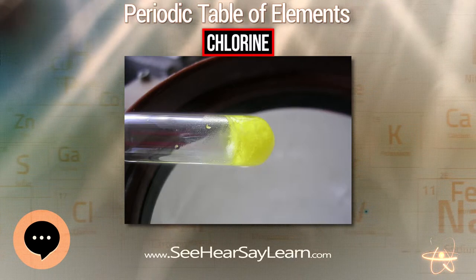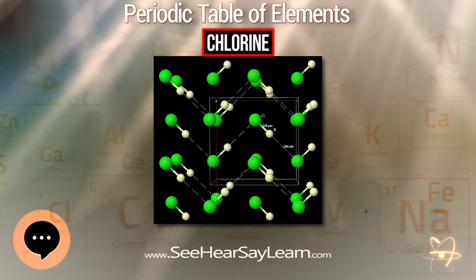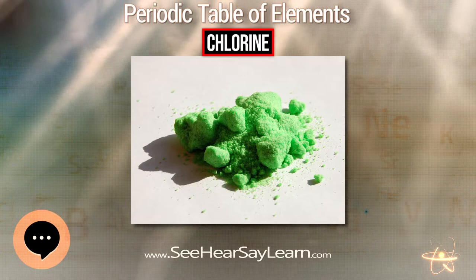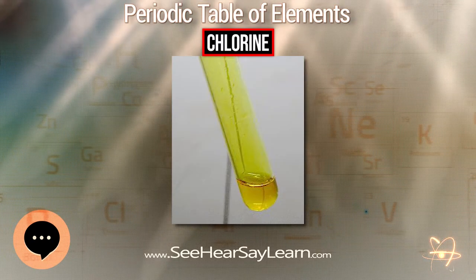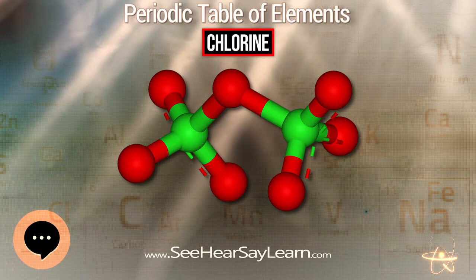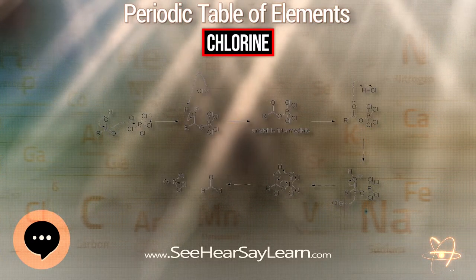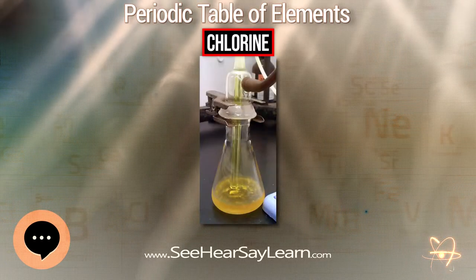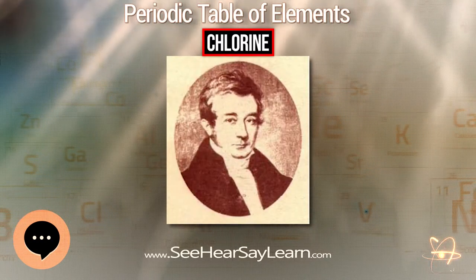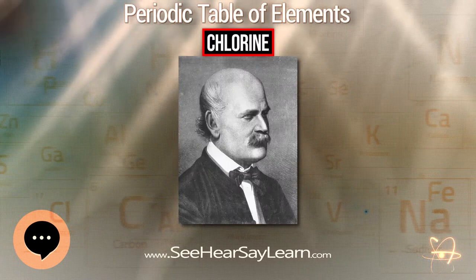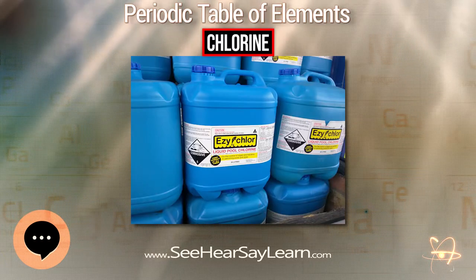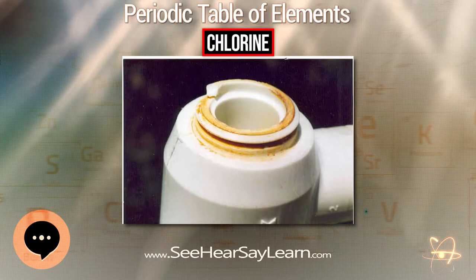ClF will act as a chlorofluorinating agent, adding chlorine and fluorine across a multiple bond or by oxidation. For example, it attacks carbon monoxide to form carbonyl chlorofluoride, COFCl. It reacts analogously with sulfur oxides SO₂ and SO₃ to produce ClOSO₂F and ClSO₃F respectively, and reacts exothermically and violently with compounds containing O–H and N–H groups such as water. Chlorine trifluoride, ClF₃, is a volatile colorless molecular liquid which melts at −76.3°C and boils at 11.8°C, and is one of the most reactive known chemical compounds.